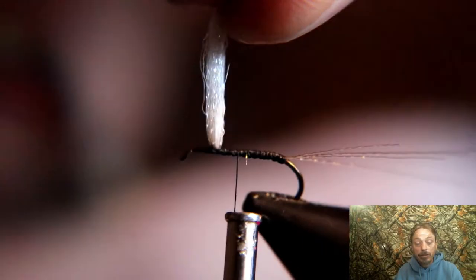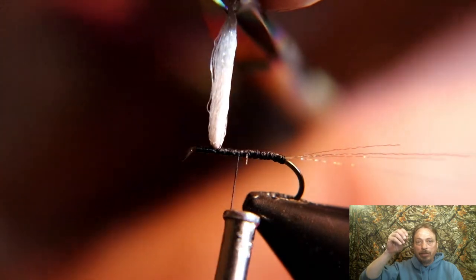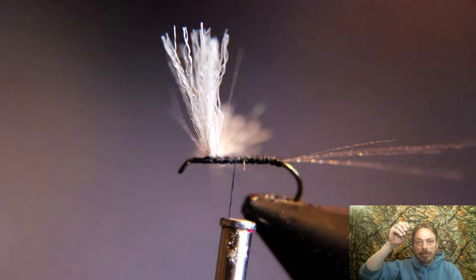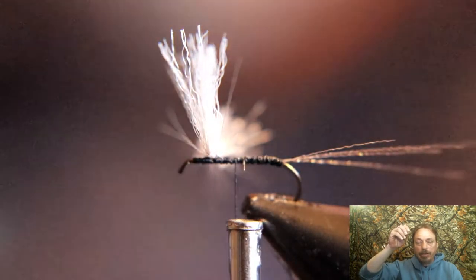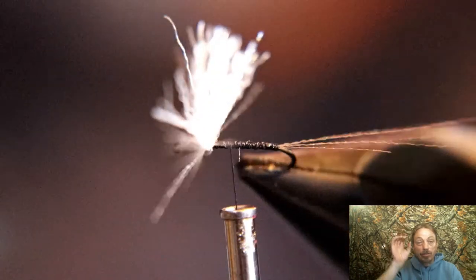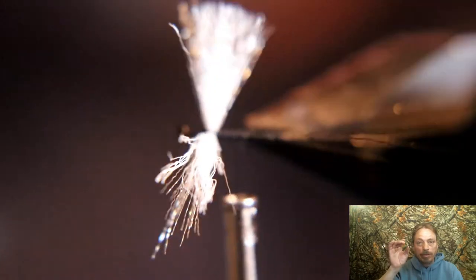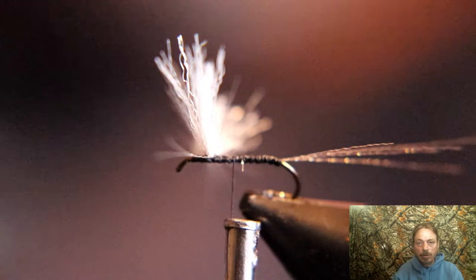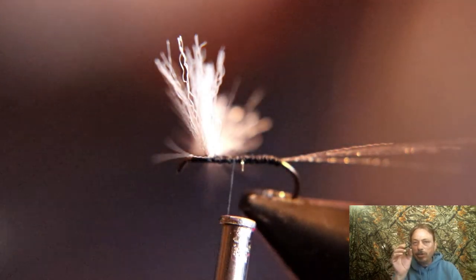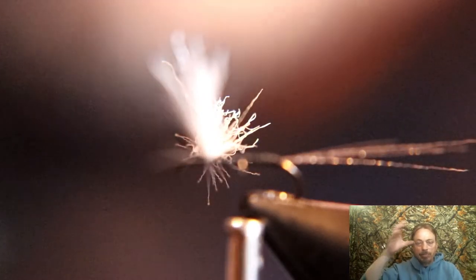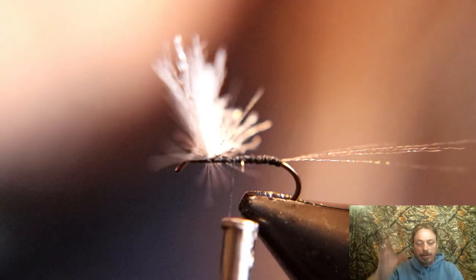Now what you're gonna do is pull all that wing material you just tied in, all straight up in the air together, and then you're gonna cut it off just a little bit longer than a typical wing. Make it just a little bit longer than a hook shank and cut that off, and that'll make all that material at one length.